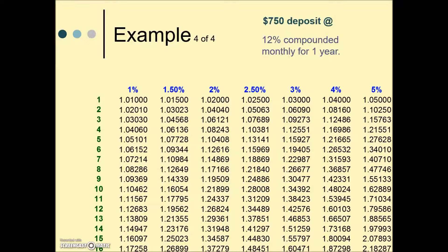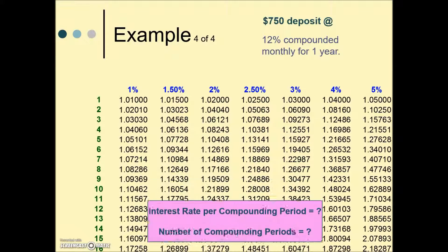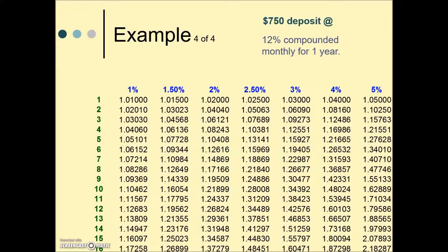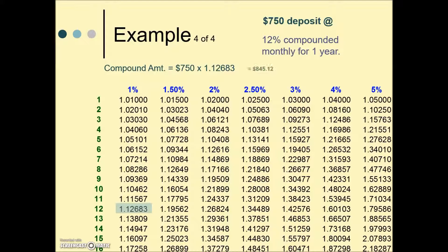Last example: 12% compounded monthly for one year. Using the table, we again need our interest rate per compounding period and the number of compounding periods. 12% compounded monthly — i would be 12% divided by 12, since there are 12 months in a year, giving us 1%. For n, one year times 12 gives 12 compounding periods. Where that row and column intersect gives our multiplier, which we then multiply by our principal to give the total amount in the account — the compound amount.